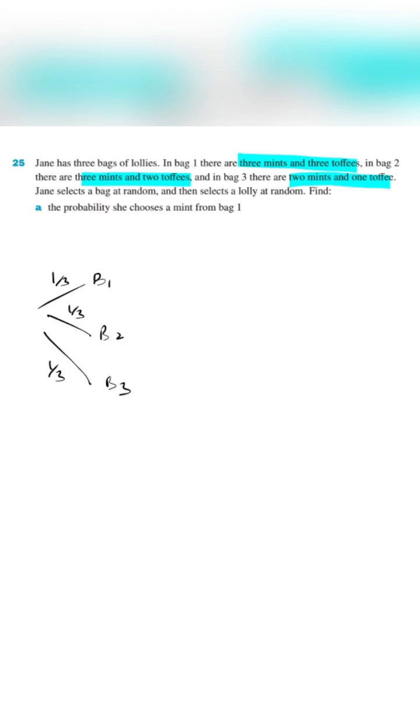Now let's move inside a particular branch. When choosing bag one, Jane can choose between mint or a toffee. And the respective probability can be found from the relative frequency. So there are total six lollies in bag one, three mints and three toffees. So the probability of mint while she's in bag one is three over six. And similarly for toffee, it's again three over six.